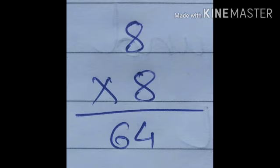Let's see number 8: 8 multiply 8. The answer I have written is 64. Can you tell me how we got this? Yes, very good. For this we use the table of 8. Let's recite the table of 8. Eight ones are 8, eight twos are 16, eight threes are 24, eight fours are 32, eight fives are 40, eight sixes are 48, eight sevens are 56, eight eights are 64. Yes, the answer is 64.